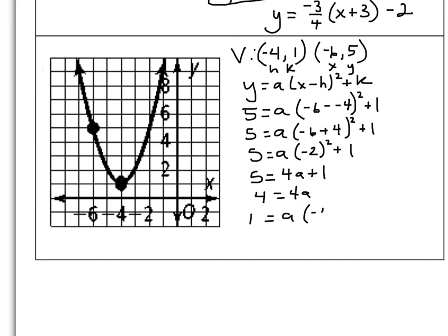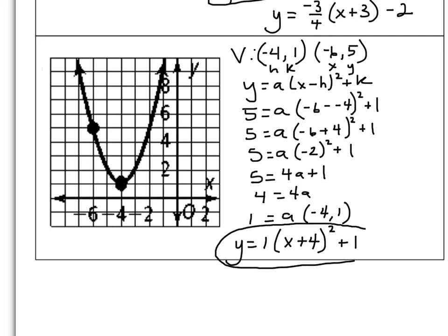With a equals 1 and vertex negative 4, 1, the equation is y equals 1 times the quantity x plus 4 — because it's x minus negative 4, giving two negatives — squared, plus 1. This is the equation of your graph. This concludes sections 4.1 and 4.2: writing equations from the graph.